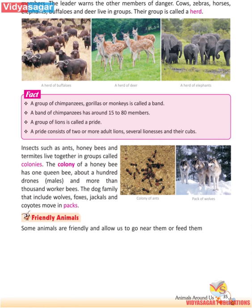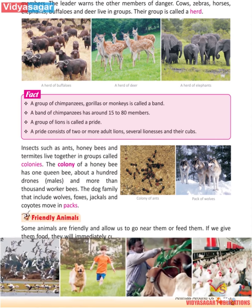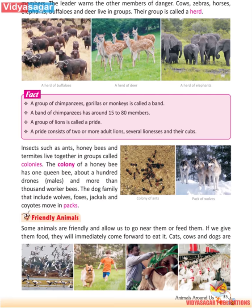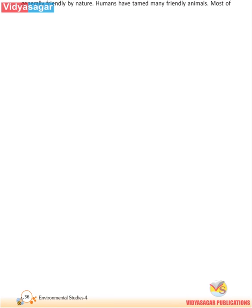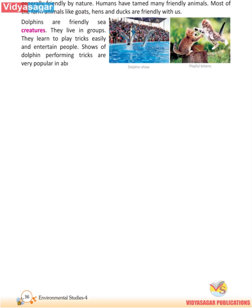Friendly Animals. Some animals are friendly and allow us to go near them or feed them. If we give them food, they will immediately come forward to eat. Cats, cows and dogs are generally friendly by nature. Humans have tamed many friendly animals. Most farm animals like goats, hens and ducks are friendly with us. Dolphins are friendly sea creatures that live in groups, learn to play tricks easily and entertain people.